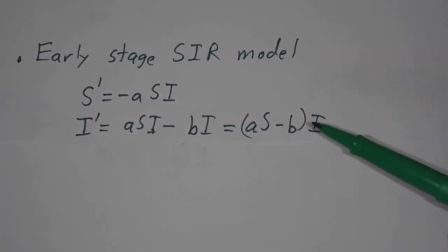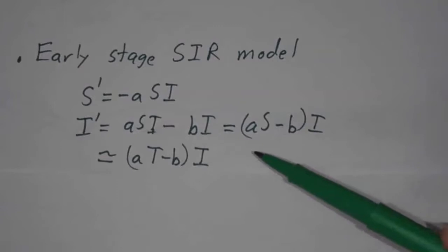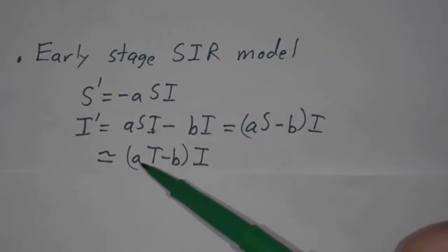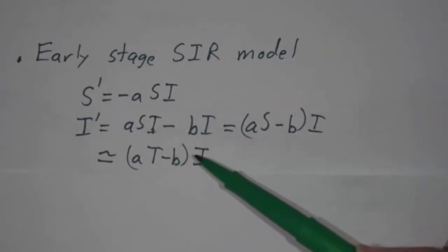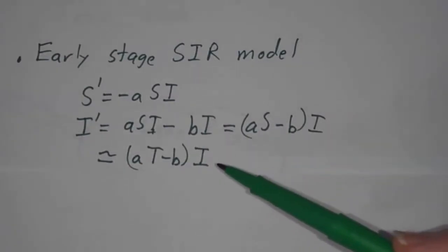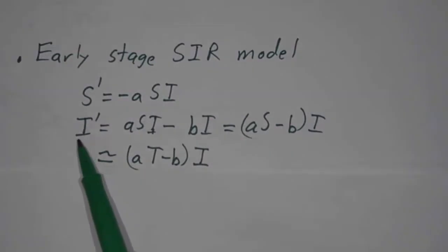And in the early stages, when almost everybody is susceptible, that's very close to a times the total population minus b times the number of infected. So the rate at which people are getting infected is a constant times the number already infected. That's exponential growth.